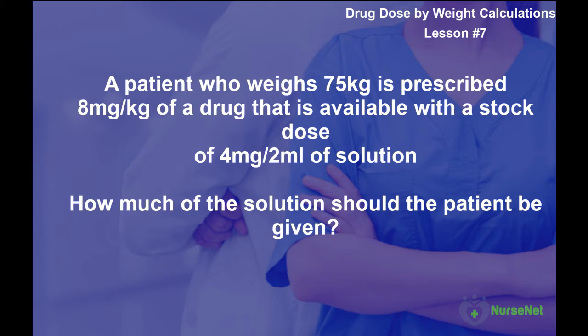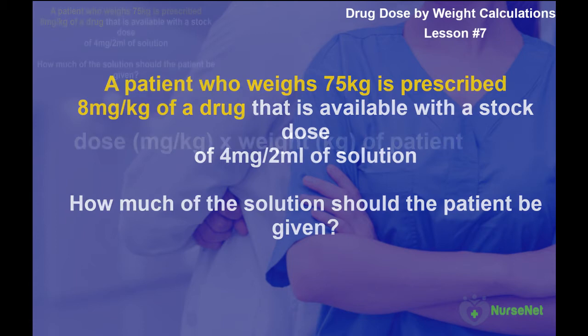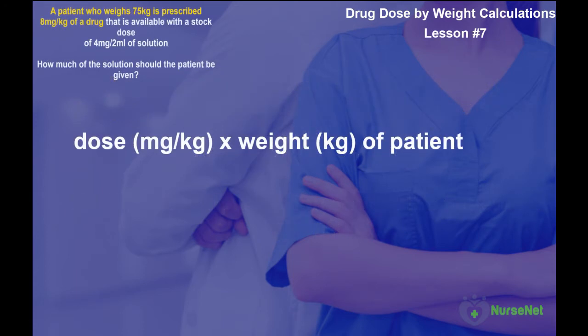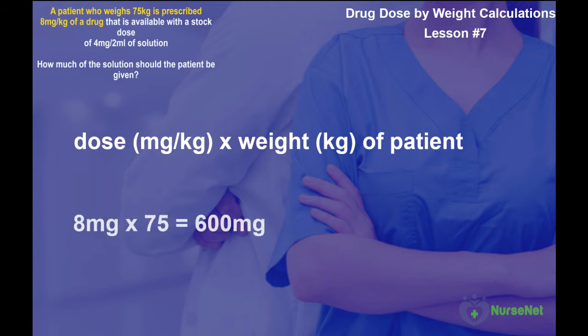This is really about comprehension of the question — what is it asking us to do? Part one: a patient who weighs 75 kilograms is prescribed 8 milligrams per kilogram of a drug. We use dose per kilogram multiplied by the weight in kilograms of the patient. So that's 8 milligrams per kilogram multiplied by 75 kilograms, which gives us 600 milligrams.